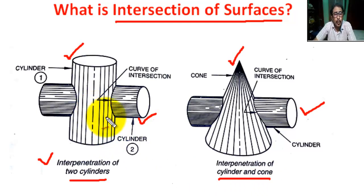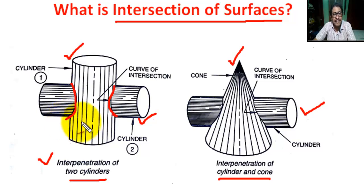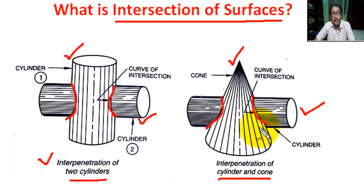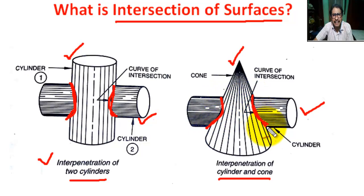Whenever two or more solids combine, a definite curve is seen at their intersection. This is called the curve of intersection or interpenetration. In this figure, this is the curve of intersection.